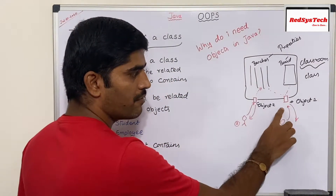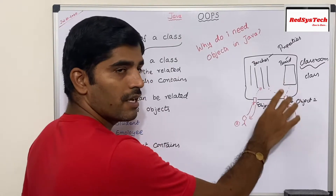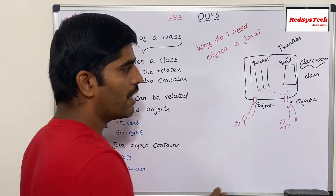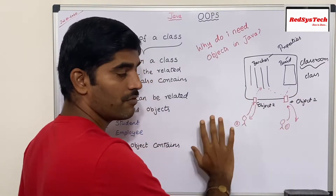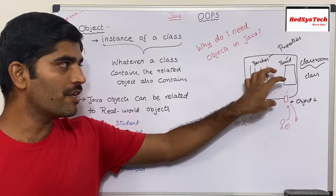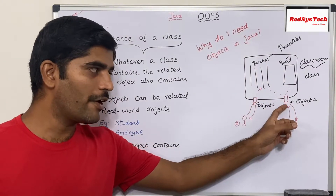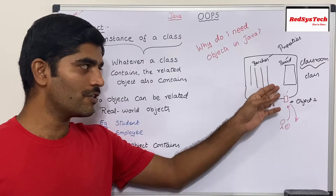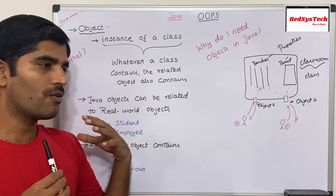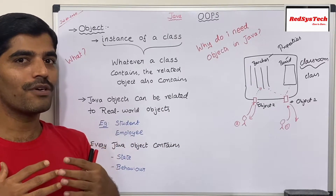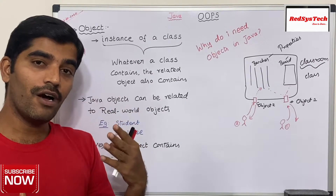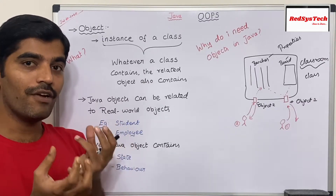The object created for a particular user's access is only accessible to that particular user — it is not shared with another user. So basically object one is different and object two is different. In simple terms, if I want to get access to some properties which are inside the class, I can create an object and using that object I can access those properties of a class. Next, I'm going to write code to explain how we can create an object of a class in Java and how it relates to memory — how memory actually stores this object when we create an object in Java.